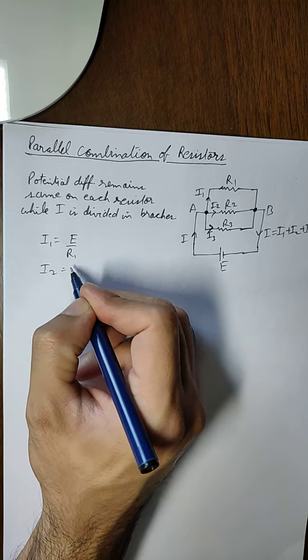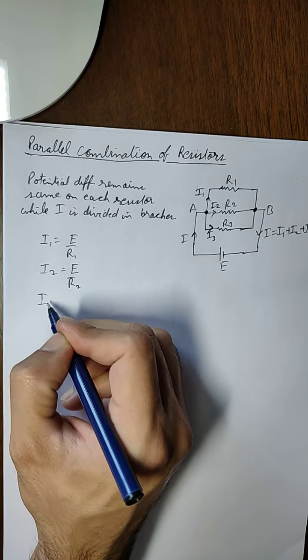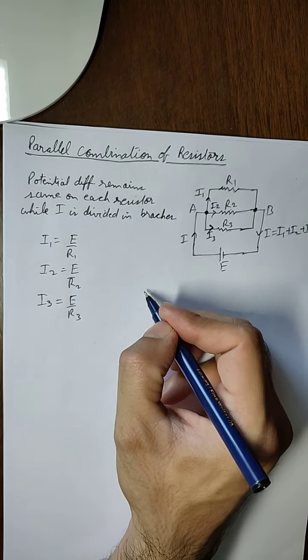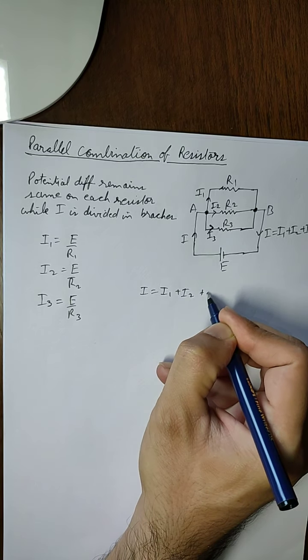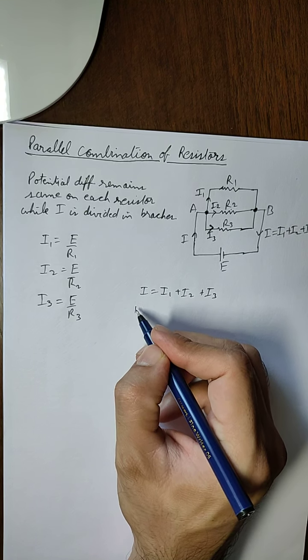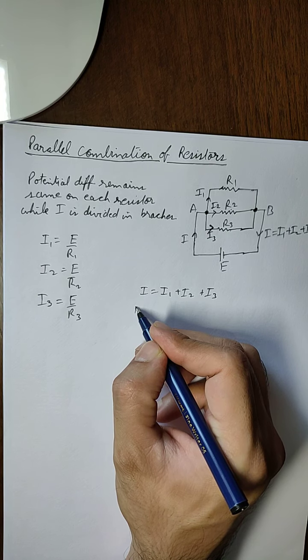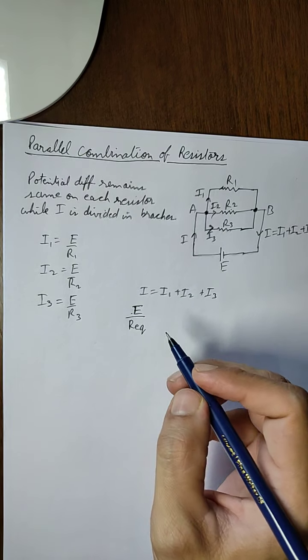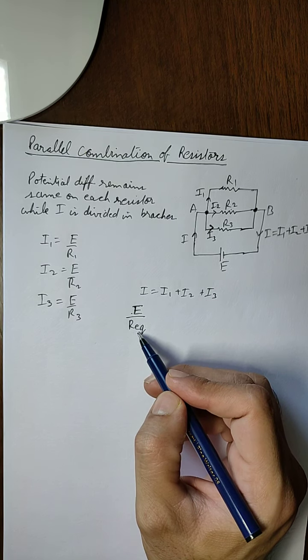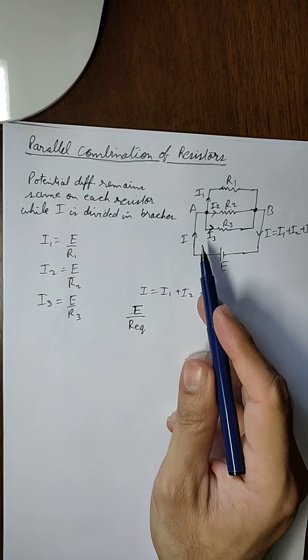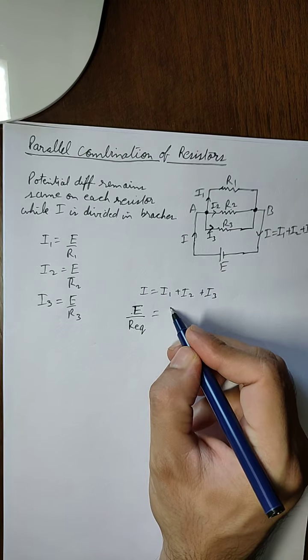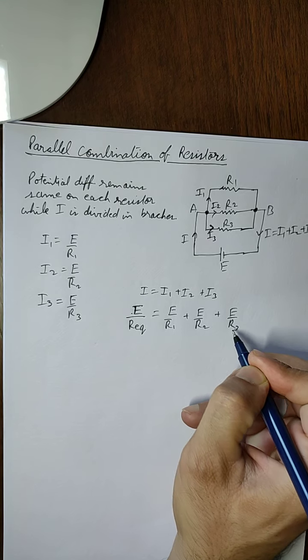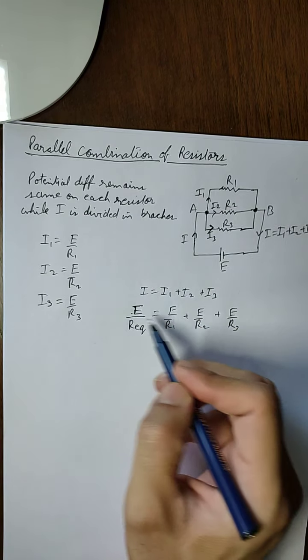This I1 can be written as E upon R1 by using Ohm's law. I2 will be equal to E upon R2, and I3 will be equal to E upon R3. Now, since I is equal to I1 plus I2 plus I3, we have substituted these values in this equation.